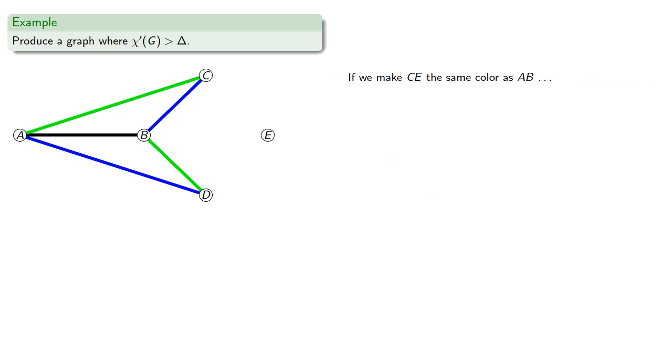If we make CE have the same color as AB, then DE must actually be a fourth color.